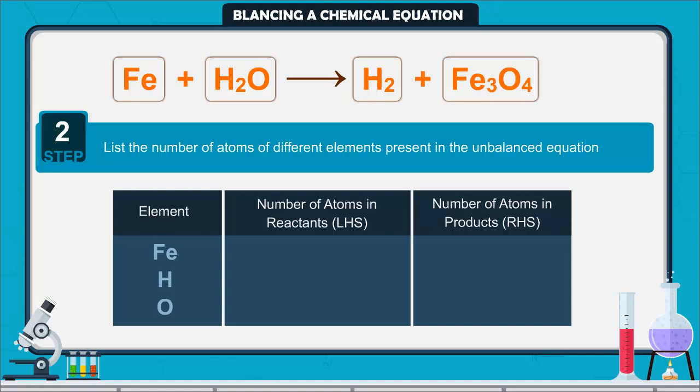On the left hand side, iron has one atom, hydrogen has two atoms, and oxygen has only one atom. And on the right hand side, iron has three, hydrogen has two, and oxygen has four atoms.